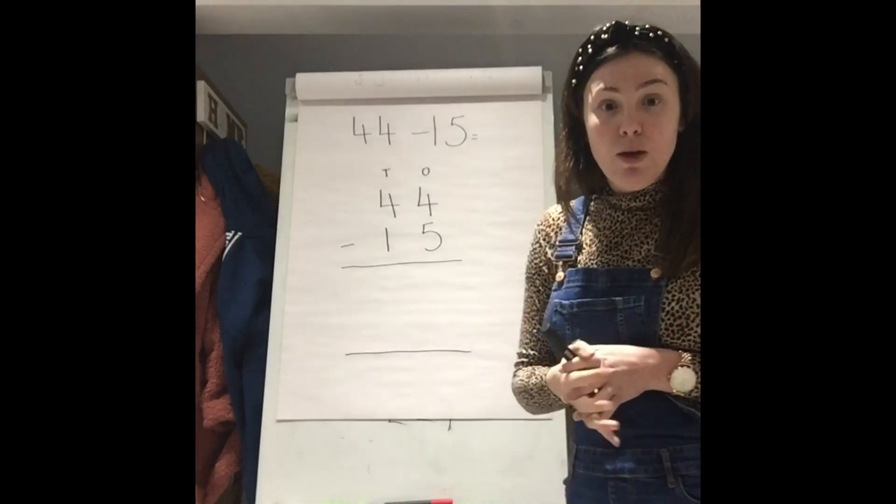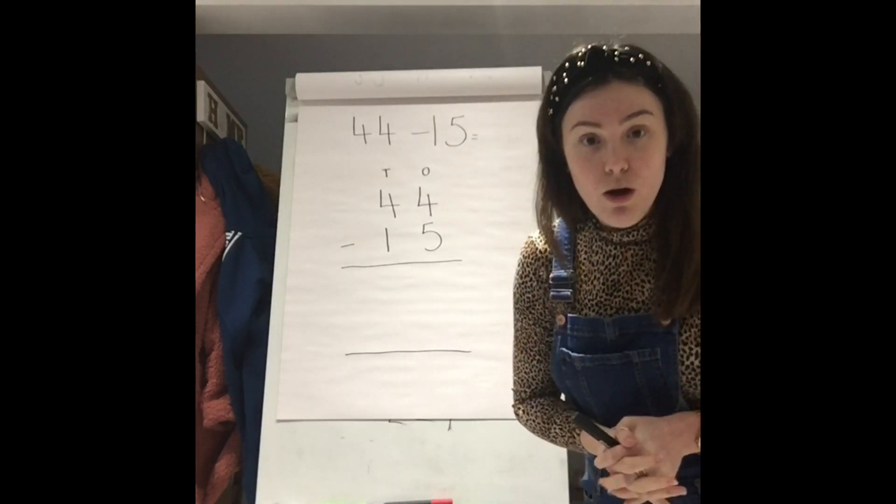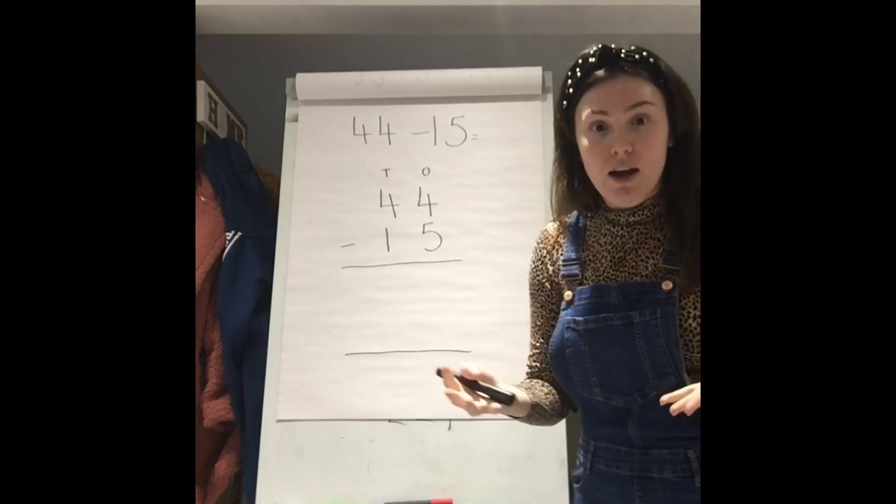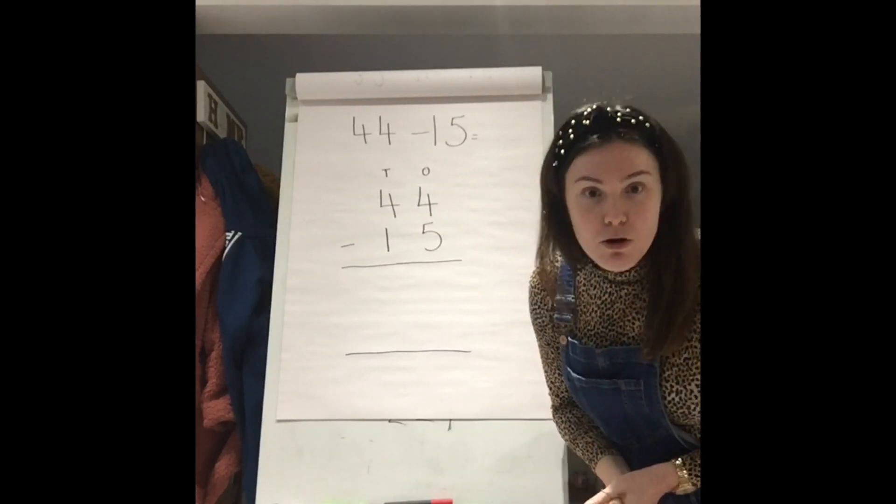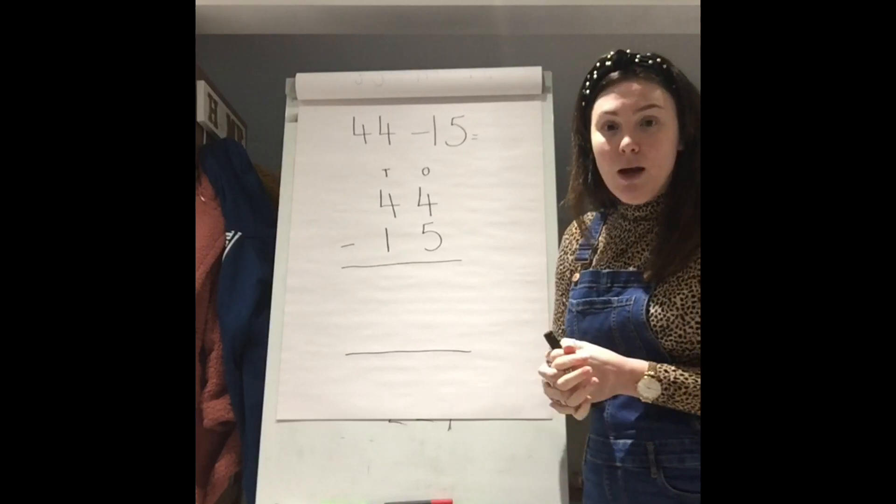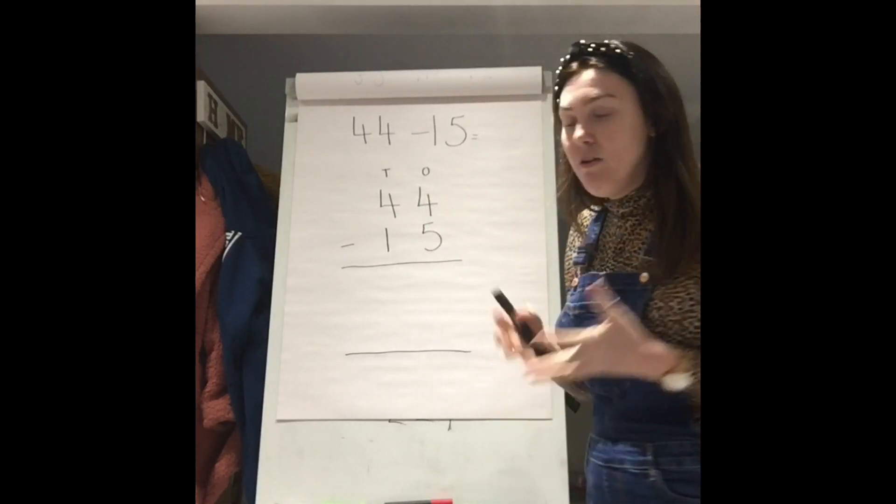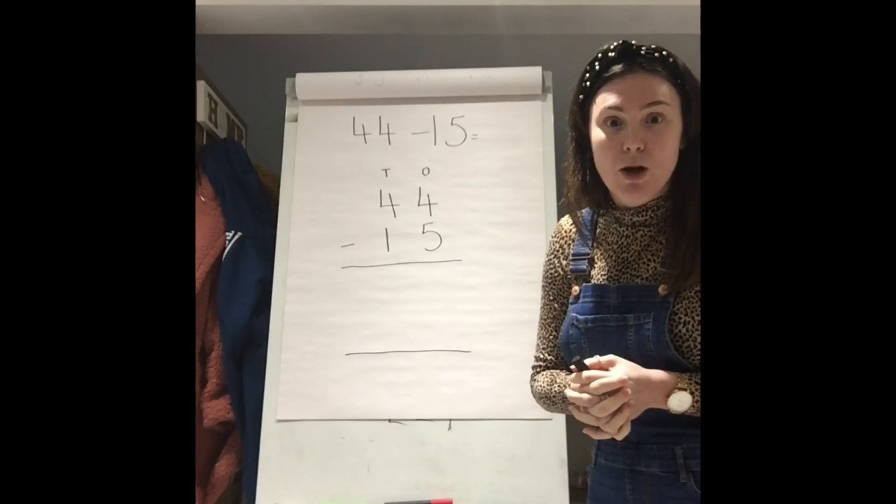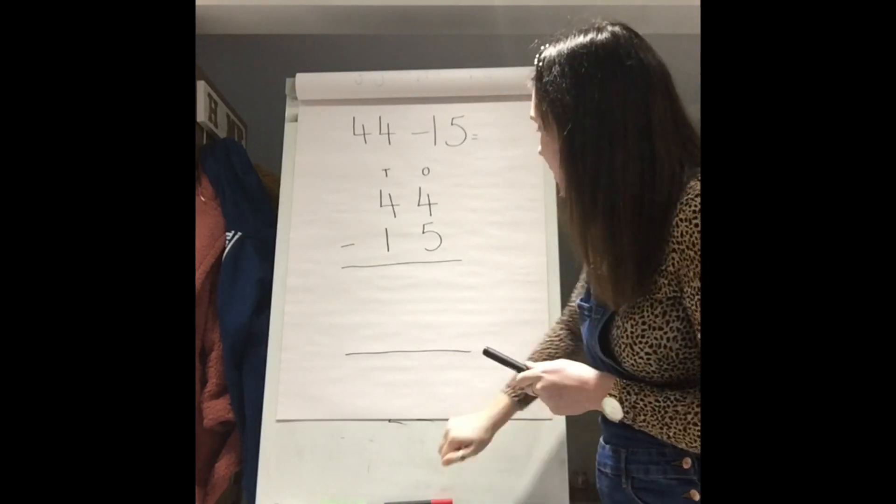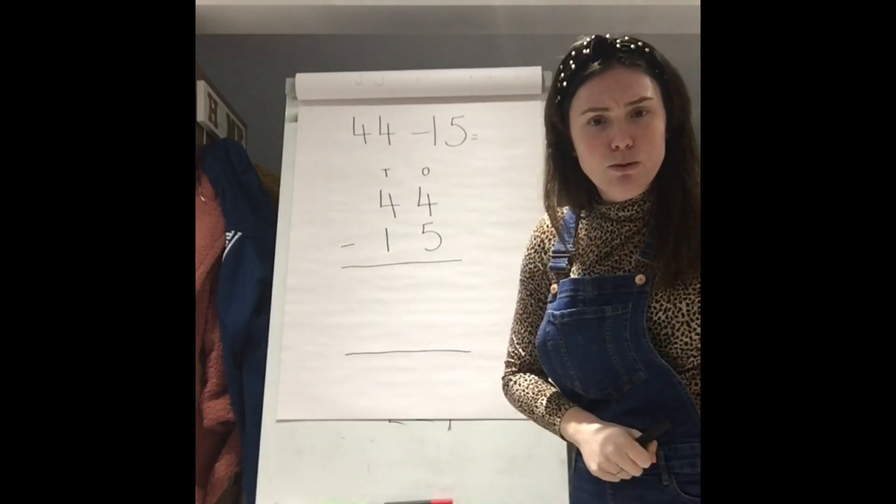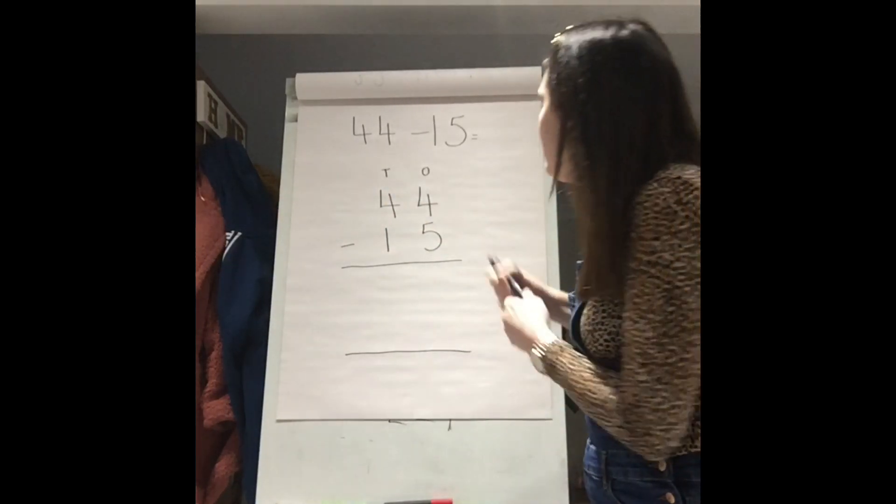So, the first thing we need to do is work out the answer to our 1s column. So, here we have 4 take away 5. And I know we've come across that problem again where we're going to need to exchange because we cannot take away 4 from 5 when we're doing our column subtraction. So, let us knock next door and say to our 40, excuse me, can I exchange one of your 10s?